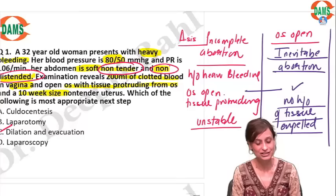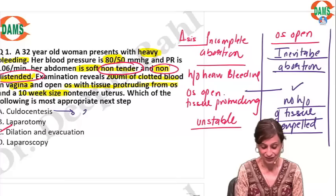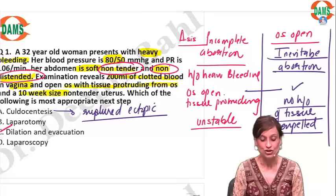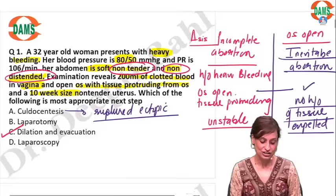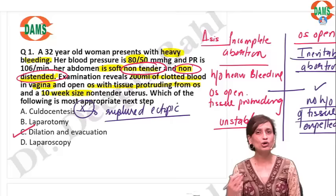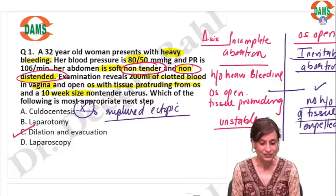Kaldocentesis is done exactly for ruptured ectopic. In kaldocentesis you aspirate blood from the pouch of Douglas, and if you aspirate blood that does not clot, you know it is ruptured ectopic. This is why kaldocentesis is not an option here. Similarly, laparotomy or laparoscopy are done for ruptured ectopic.